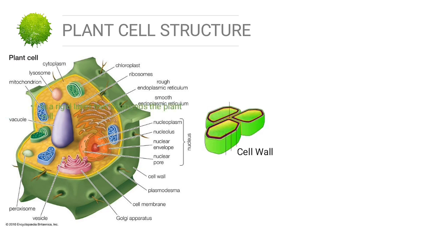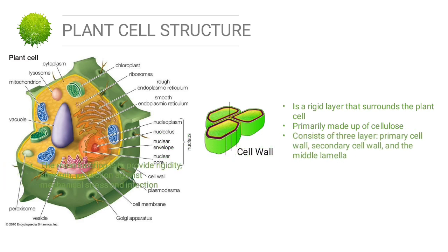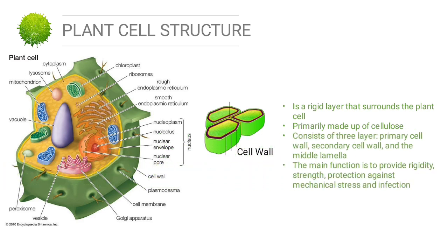The next organelle is the cell wall. The cell wall is a rigid layer that surrounds the plant cell, primarily made up of cellulose. It consists of three layers: the primary cell wall, secondary cell wall, and the middle lamella. The main function is to provide rigidity, strength, and protection against mechanical stress and infection.